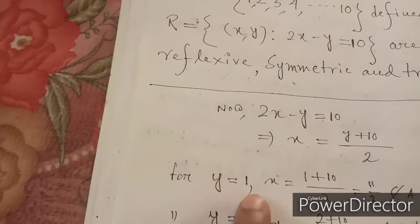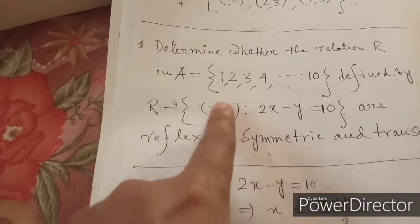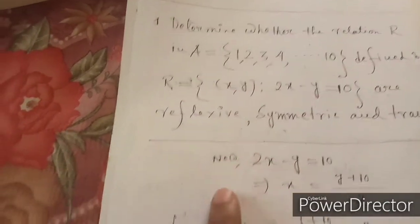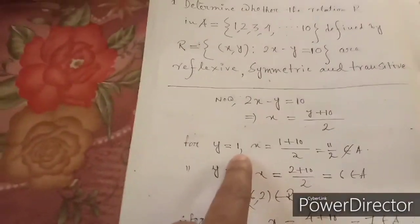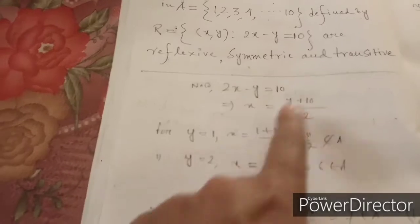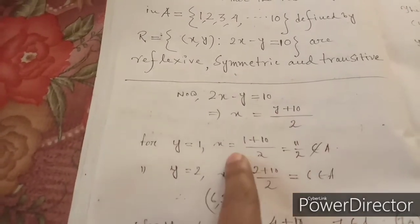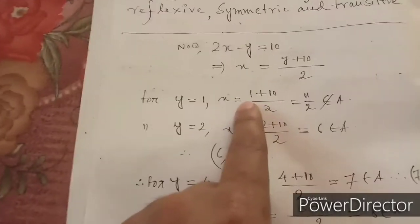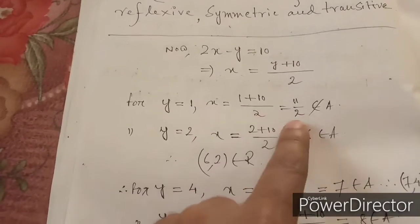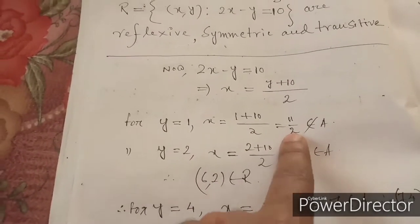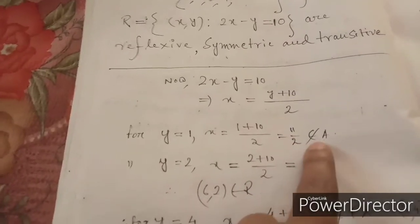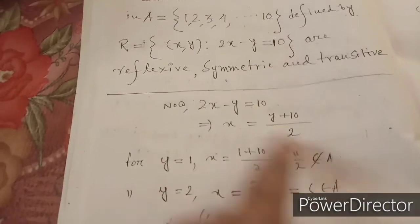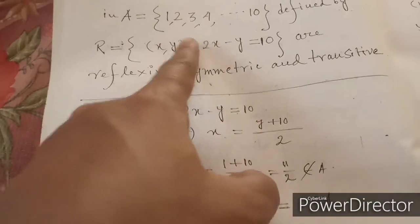We can choose y = 1, since the first element of A is 1. Putting y = 1: x = (1 + 10) / 2 = 11/2, which is not a natural number. So this x cannot belong to A, which consists of natural numbers {1, 2, ..., 10}.